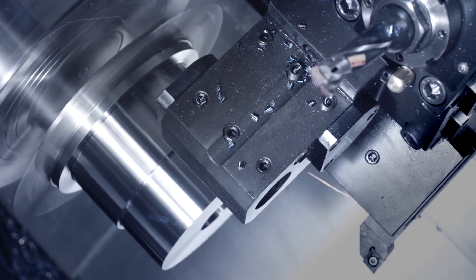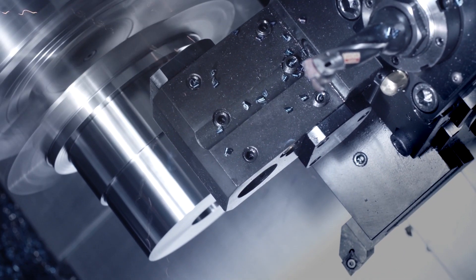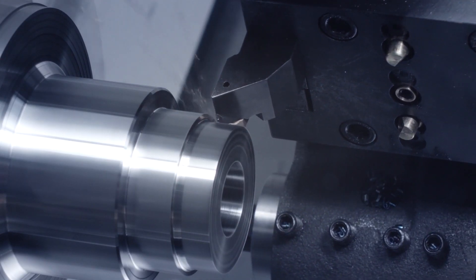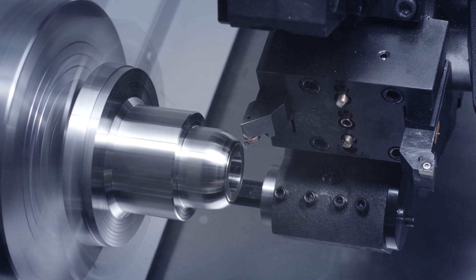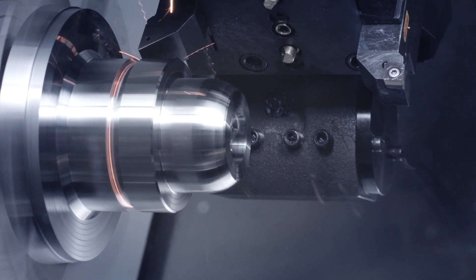Question, do you make high precision parts for tough to machine materials? Well then, say hello to the PUMA 2600 SY-2, the hottest turning center on the market.